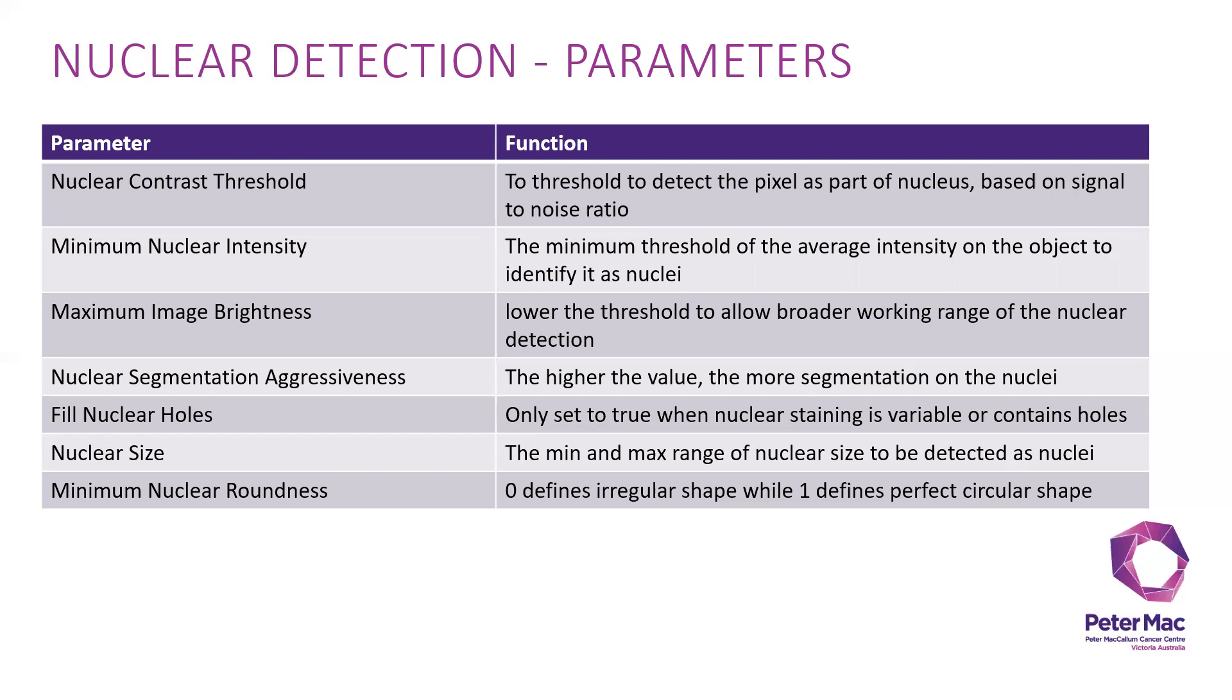You can adjust the nuclear size, the mean and maximum range to be detected as nuclei, and the nuclear roundness as well. Zero is the irregular shape and one is the perfect circular shape, which you can use to adjust and filter the nuclei that you would like to detect.